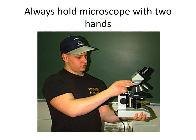In the lab we're always going to move a microscope using two hands, as seen in this image. Microscopes are going to be stored in the back cabinet of the lab, and anytime we move the microscopes from the cabinet to our lab bench — or even at our lab bench — we want to do that using two hands. This individual is holding the arm of the microscope with his right hand and the left hand is underneath the base. This is how we always want to move the microscope.